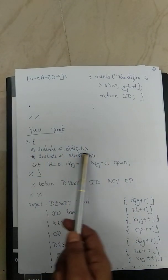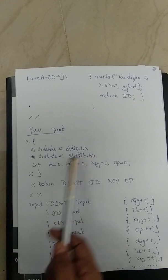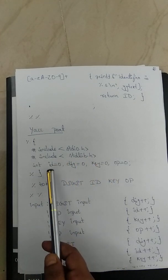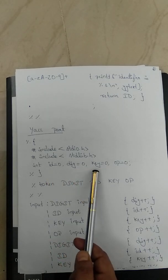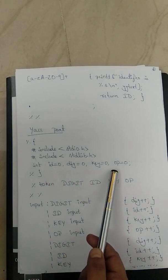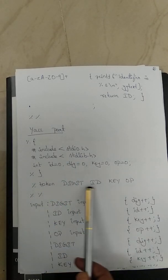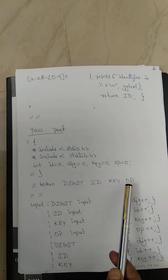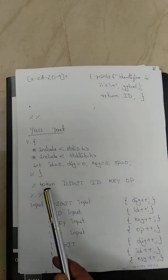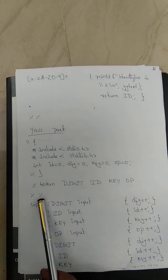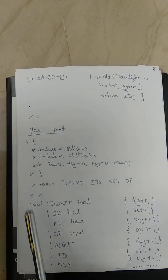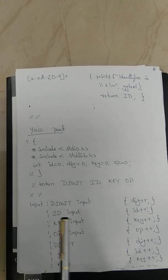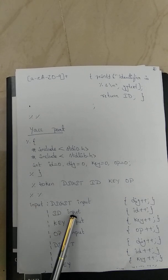Next is the YACC part. In the declaration section, header files are included and variables are declared to count identifier number, digit number, keywords number, and operators number. The tokens referred to are: DIGIT, ID, KEY, and OP. The declaration section ends with %%.